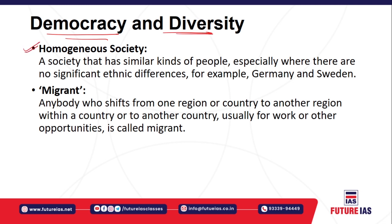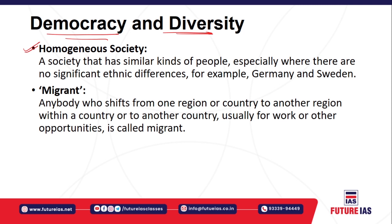Let's discuss about homogeneous society. What is homogeneous and what is heterogeneous society? Any society which is called homogeneous means it is having similar kind of people — people who have no significant ethnic difference. That means in terms of their culture, their particular origin, their particular descendant, they should be similar. So that is called homogeneous society — no significant ethnic differences.